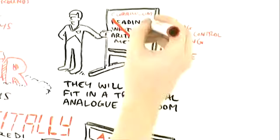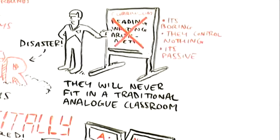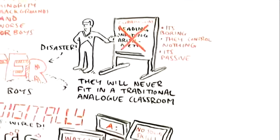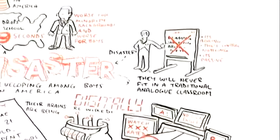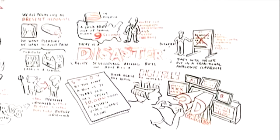And if you want to change the curriculum, I understand the traditionalists say we've got to go back to reading, writing, arithmetic. Disaster. These kids will never fit into that. They have to be in a situation where they are controlling something, and school is set up, you control nothing. You're passive.